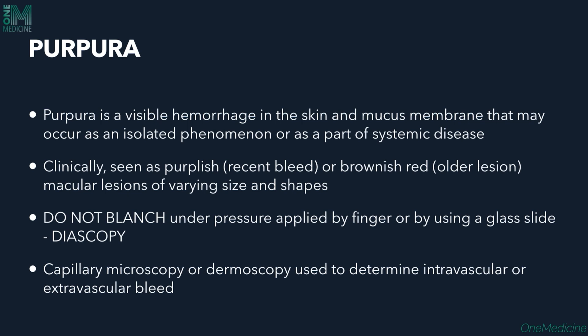Purpura is a visible hemorrhage in the skin and mucous membranes that may occur as an isolated phenomenon or as part of a systemic disease. There is visible bleeding in the skin and mucous membranes, and it can occur individually or be associated with some systemic disease.